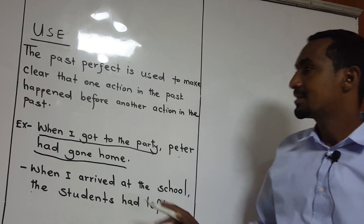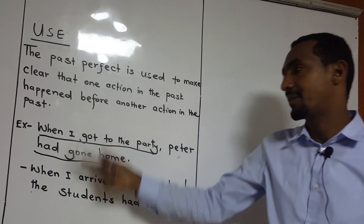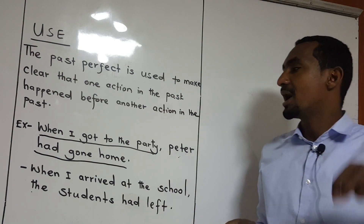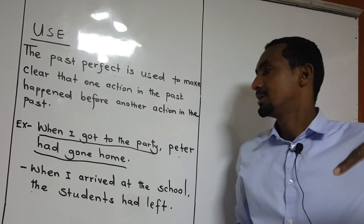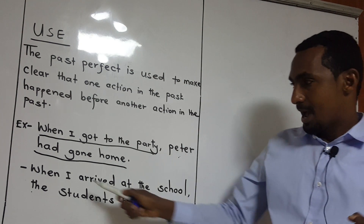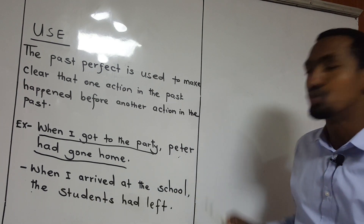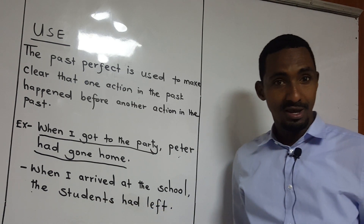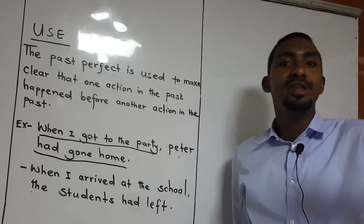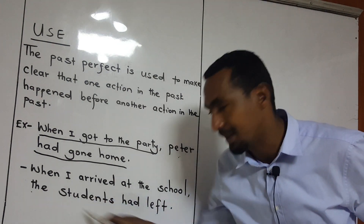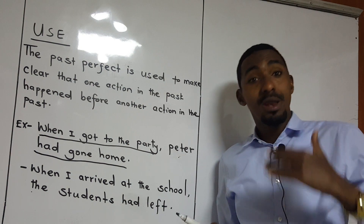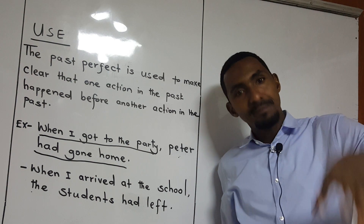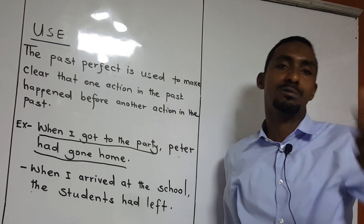So that means one action happened before another action in the past. Another example: when I arrived at the school, the students had left. You see — the students had left before you arrived. When I arrived at the cinema, the film had started. It means that the film had started before you arrived, and then you missed part of it.